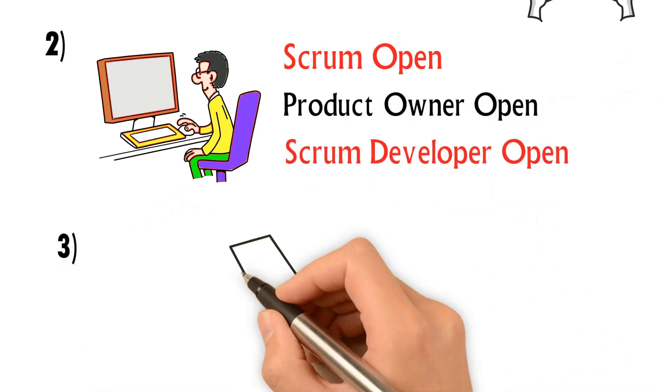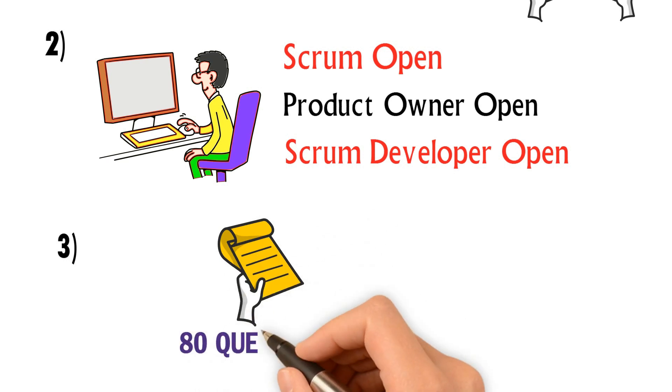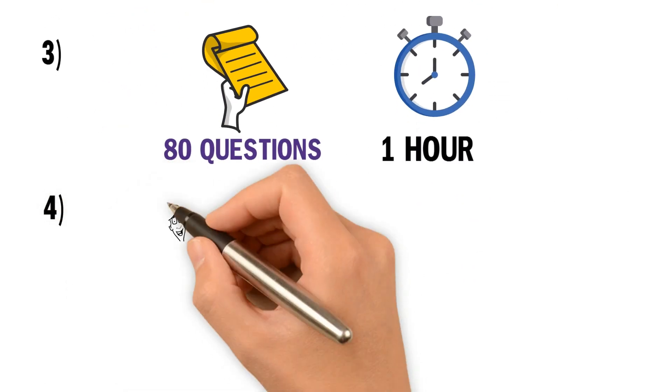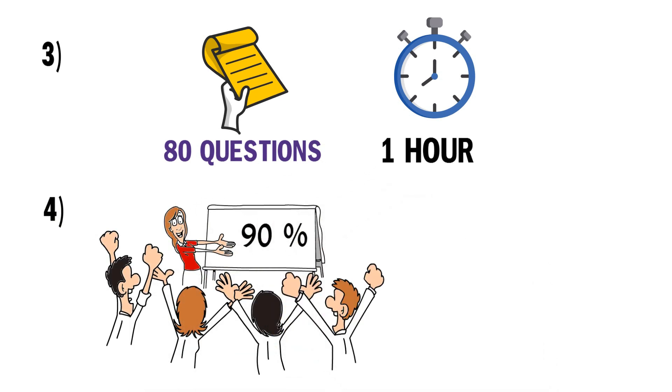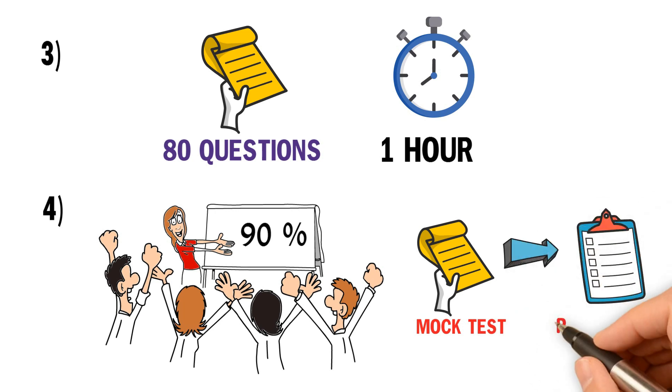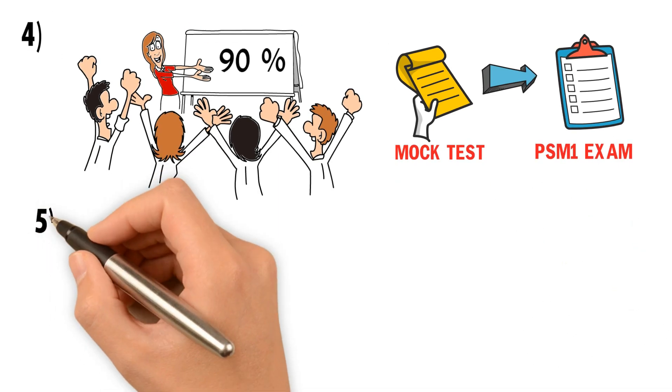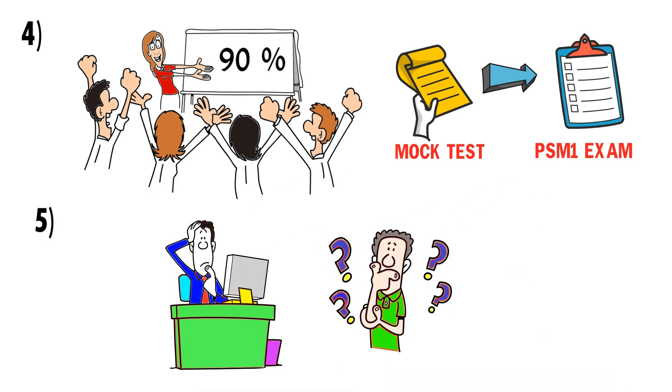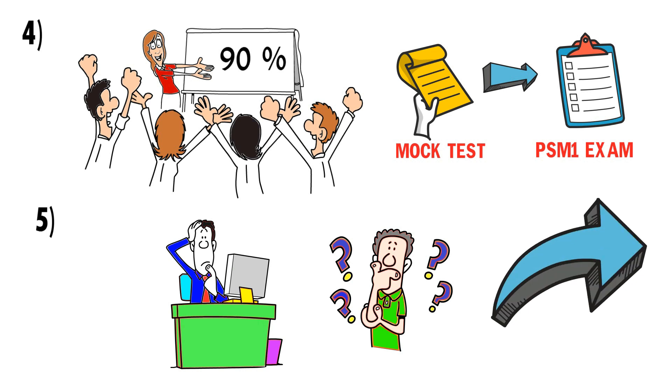You need to complete 80 questions in an hour for each mock exam. You should score at least 90% for each mock exam to feel comfortable to take a real PSM 1 exam. However, if you are not quite ready, please read next few slides for your PSM 1 exam preparation.